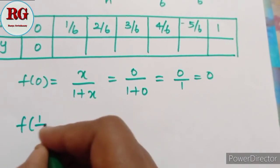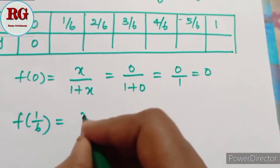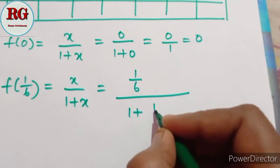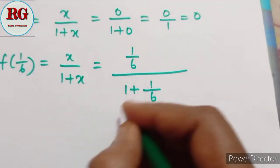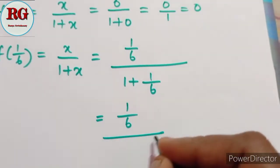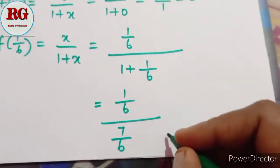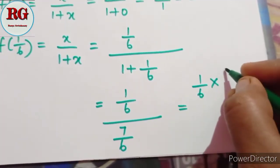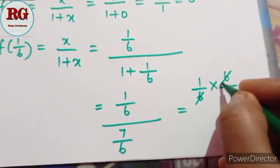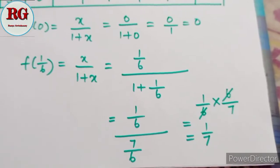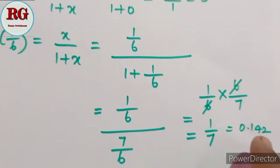Next, f(1/6): substituting into the function gives (1/6) divided by (1 plus 1/6). Taking LCM, that is (1/6) divided by (7/6). Turning upside down: (1/6) multiplied by (6/7) equals 1/7, which is approximately 0.142.